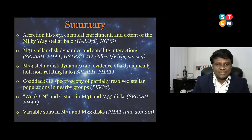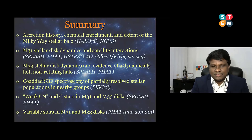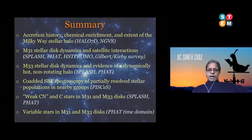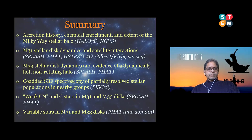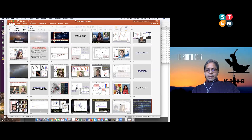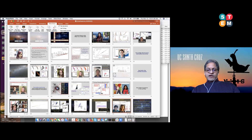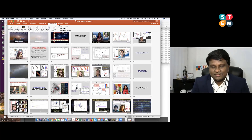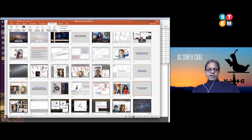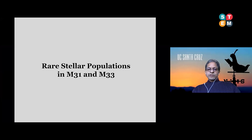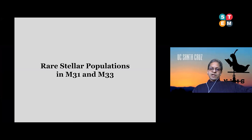We have some extra time, so I'd love to go over the weak CN stars in more detail. The part I rushed through is talking about rare stars in the Andromeda and Triangulum galaxies. What you see on the left are three representative spectra — the signal-to-noise is marked next to each. What you're seeing in these three spectra are very sharp corrugations that are not noise, because those corrugations are present in all three spectra. These are three different stars in Andromeda.